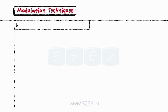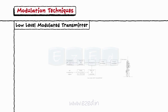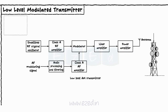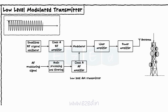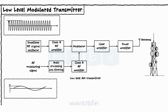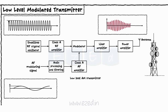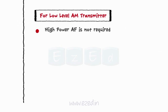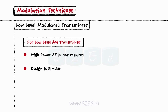The next transmitter is the low level modulated transmitter. Its block diagram is as shown. In the low level modulated transmitter, the carrier signal is generated by an RF oscillator. The modulator is a separate block in this case, and the modulating signal is amplified using a class A amplifier. At the output of the modulator, we get the modulated wave, which is then passed through a series of linear amplifiers to raise its power level. For the low level transmitter, high power AF is not required, and thus its design is much simpler than the high level transmitter.